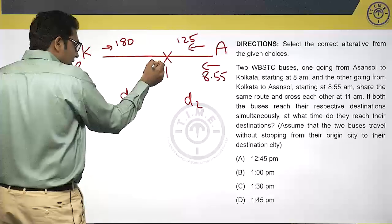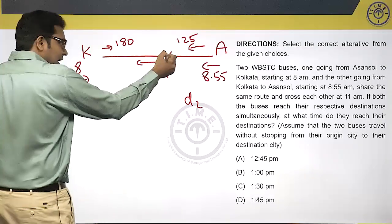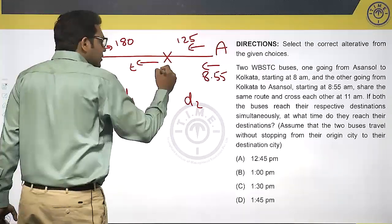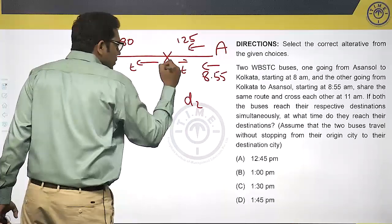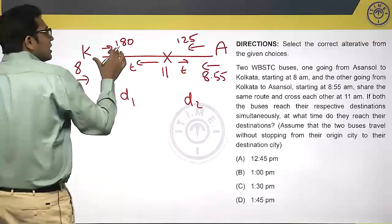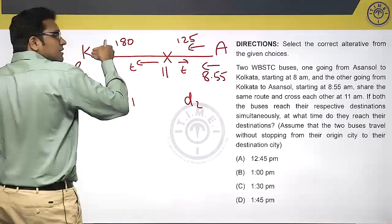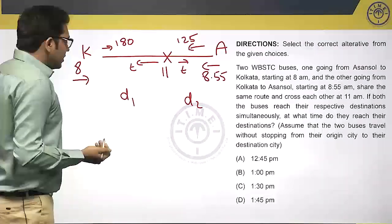After reaching, A takes, say, T minutes to reach this point. K will also take the same time to reach the other point because they reach the destination simultaneously. After meeting, they should take the same time to travel to the respective destinations.